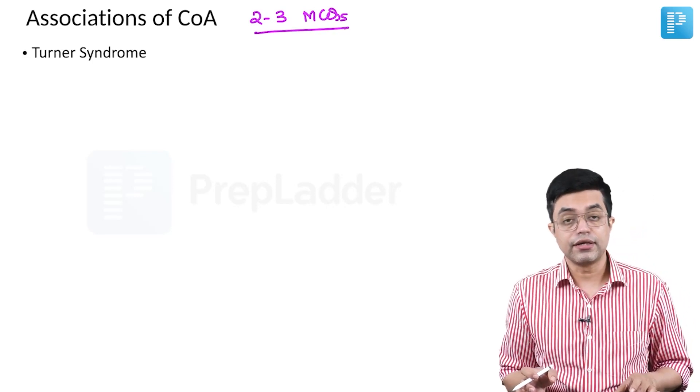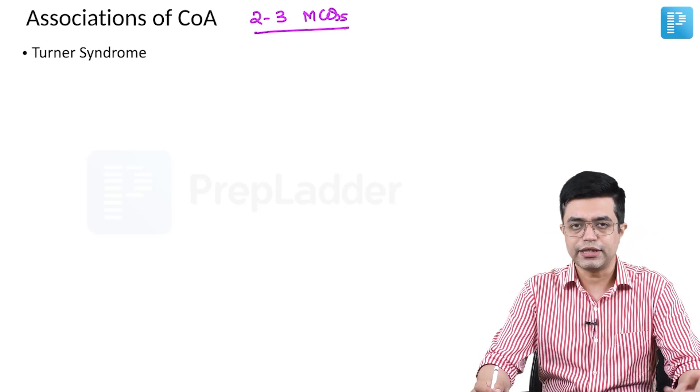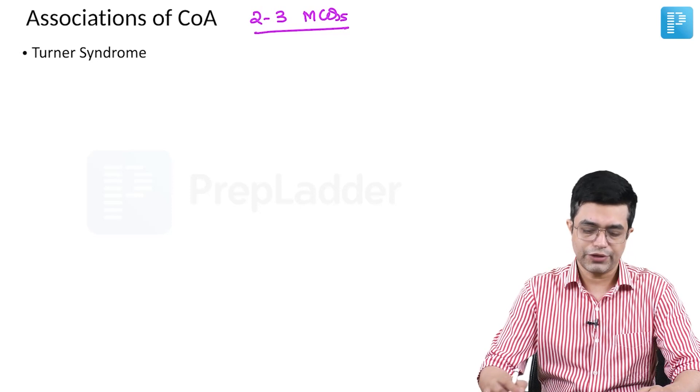The first association is Turner syndrome. You know that Turner syndrome is often associated with bicuspid aortic valve as well as with coarctation of aorta.